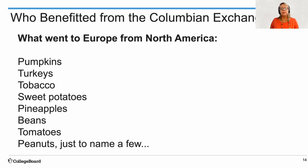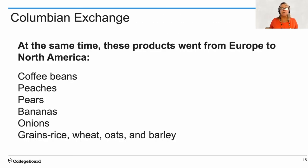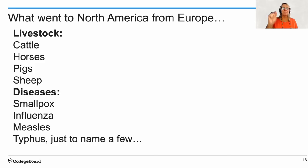So who benefited from the Columbian Exchange? Products brought from the Americas to Europe included pumpkins, turkeys, tobacco, sweet potatoes, pineapples, beans, potatoes, and peanuts, just to name a few. At the same time, products came from Europe to North America: coffee beans, peaches, pears, bananas, onions, and grains such as rice, wheat, oats, and barley. From Europe also came cattle, horses, pigs, and sheep, which were very significant for the growth of the population — especially horses in the Great Plains.